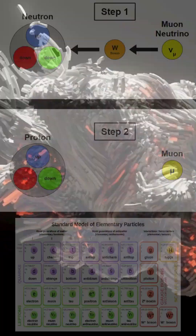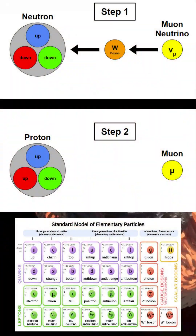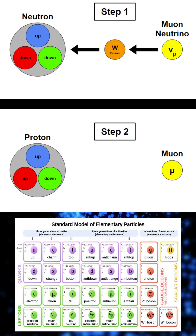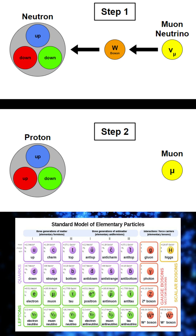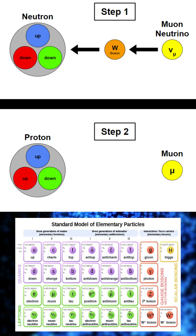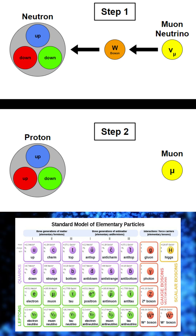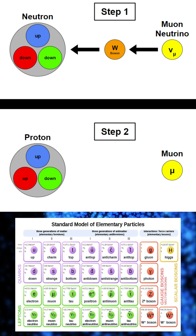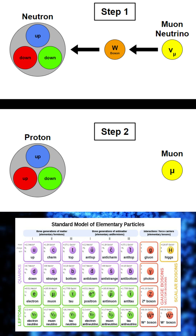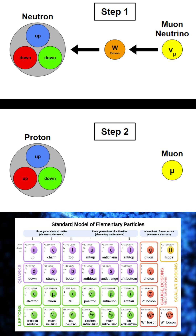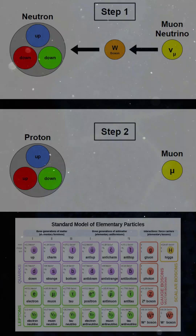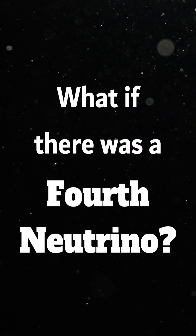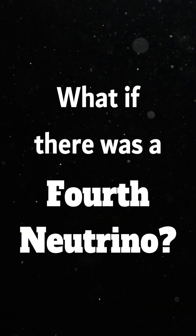An example of one of these interactions would be a muon neutrino with a neutron. In doing so, a W boson is exchanged from the muon neutrino to the neutron, in order to respectively transform these two particles into a muon and a proton.